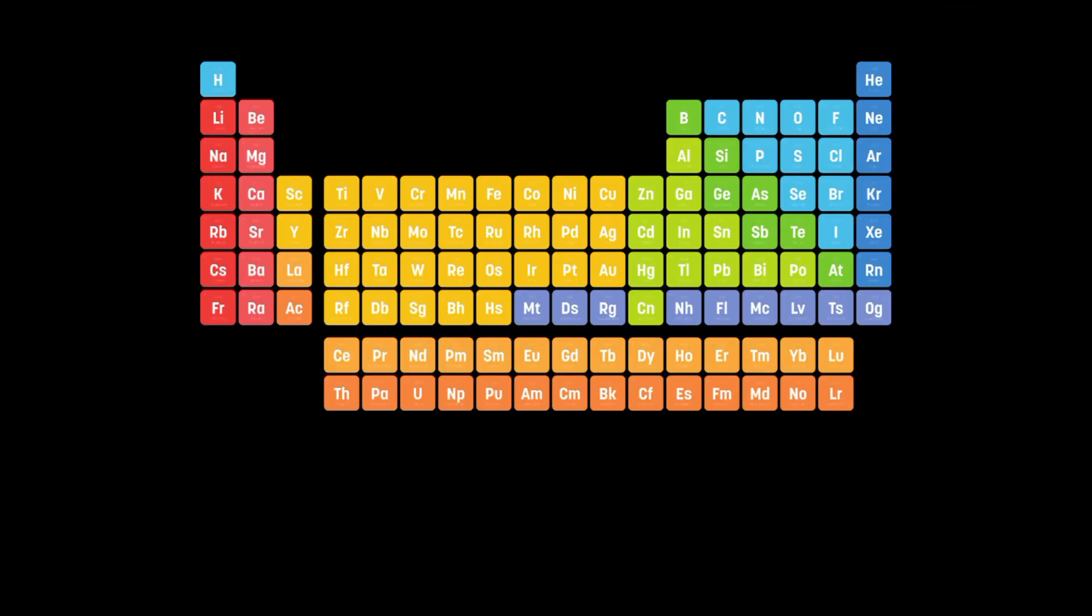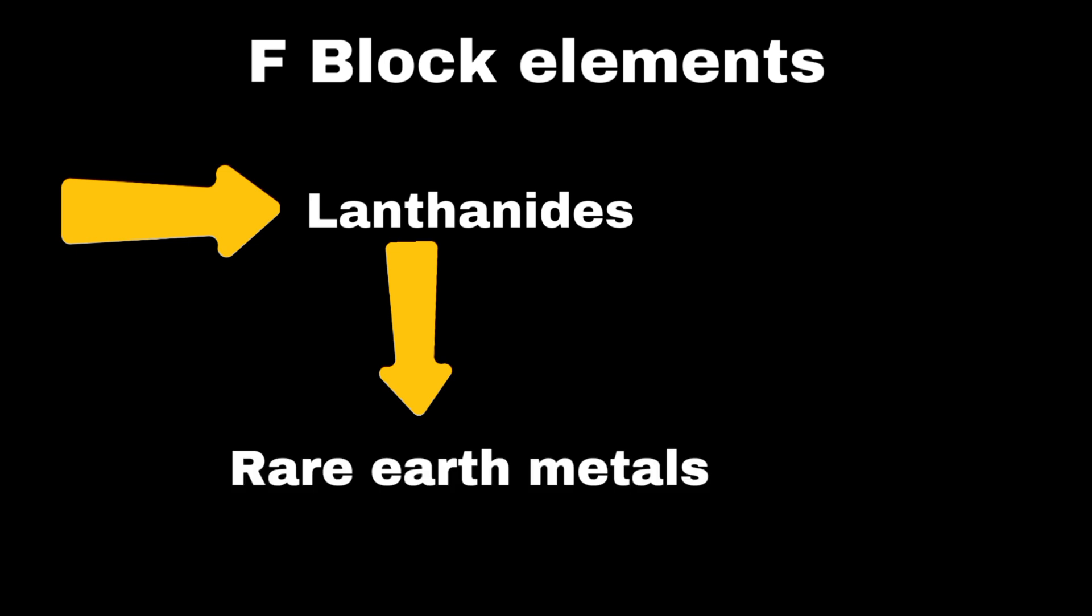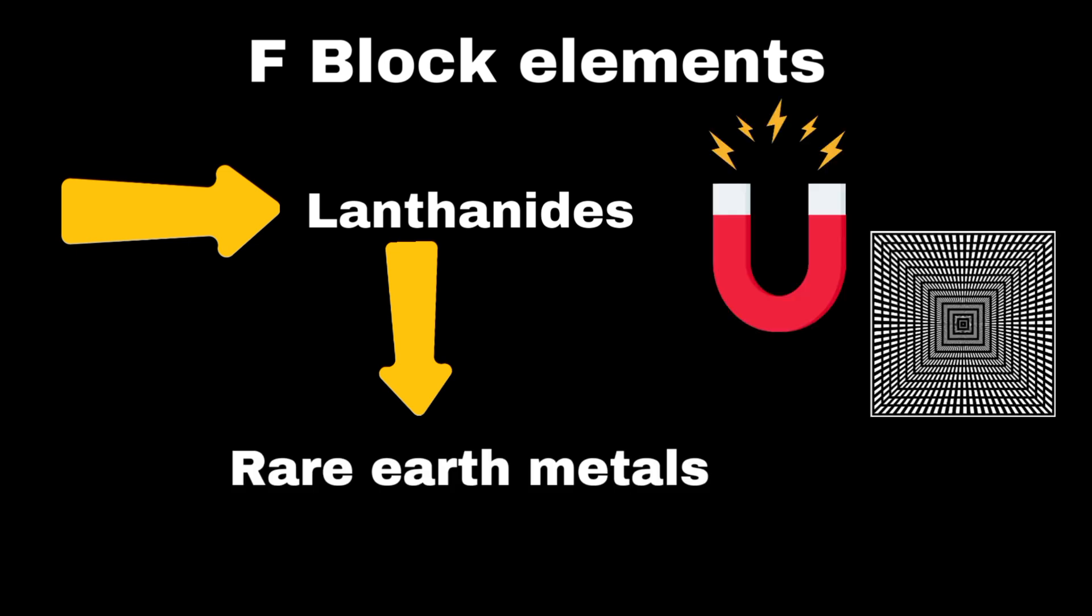The F block elements are located at the bottom of the periodic table and include the lanthanides and actinides. These elements have electrons filling the F orbital, giving them unique properties. Lanthanides, often called rare earth elements, include cerium and neodymium. They are known for their magnetic and optical properties and are used in products like magnets, lasers, and rechargeable batteries.